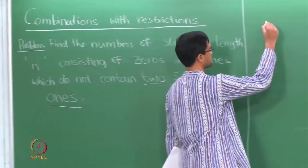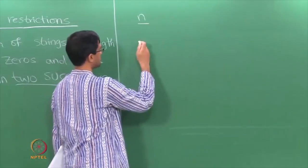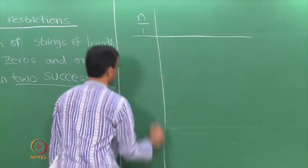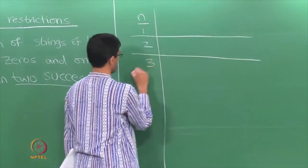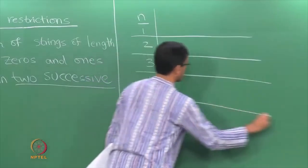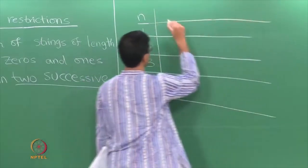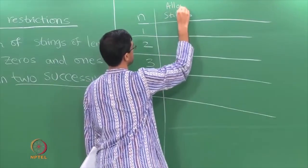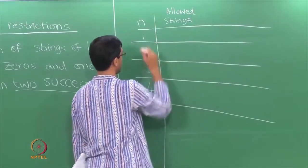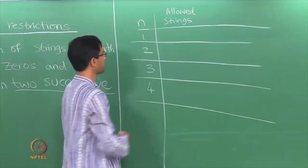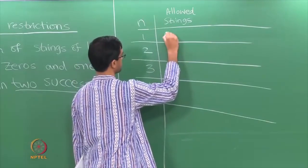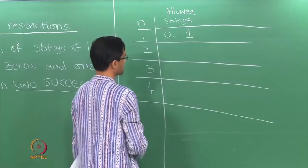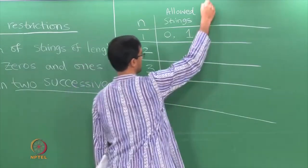What are such strings? Let us say n is the length of the string. The length could be 1, 2, 3 and so on. Let us write down a table. For n equals 1, if I only have a string of length 1 consisting of a 0 or a 1, there are 2 possibilities: the string with just a 0 or the string with just a 1. Both are allowed since there are no 2 successive 1s.